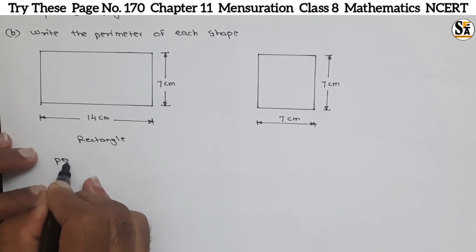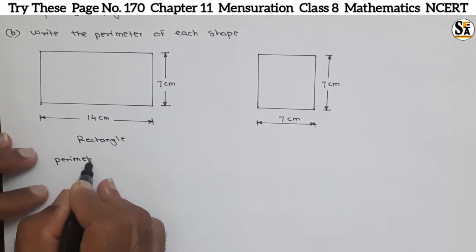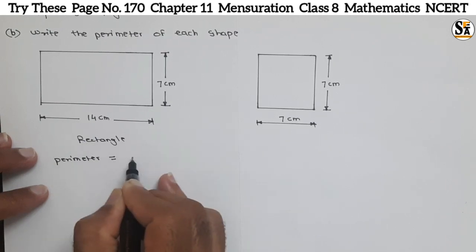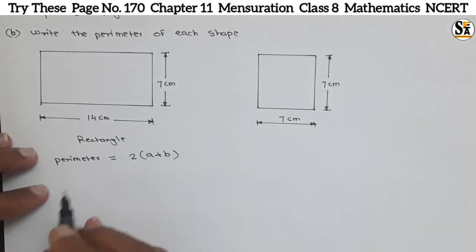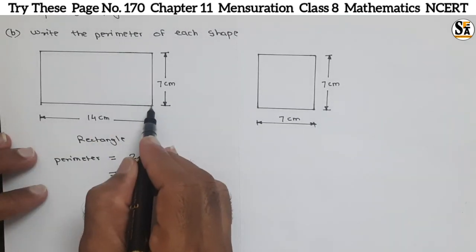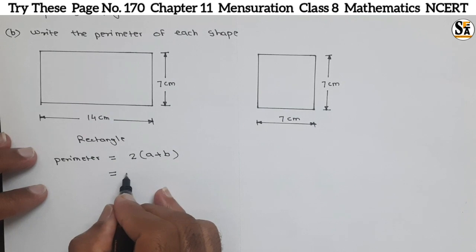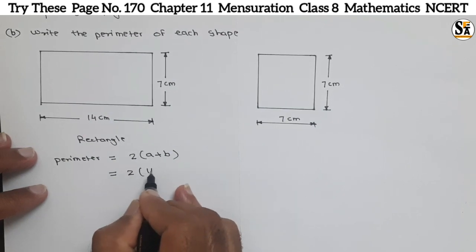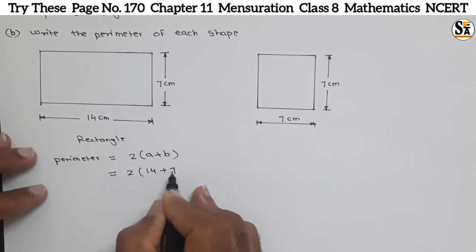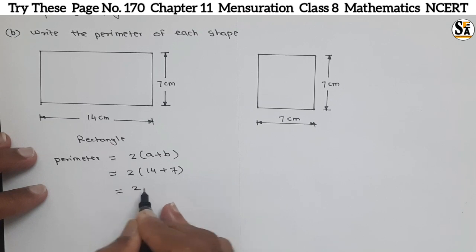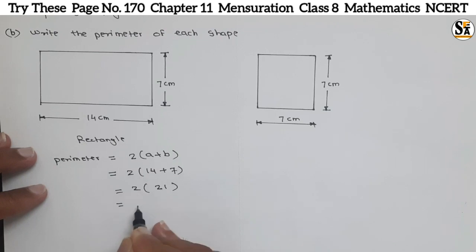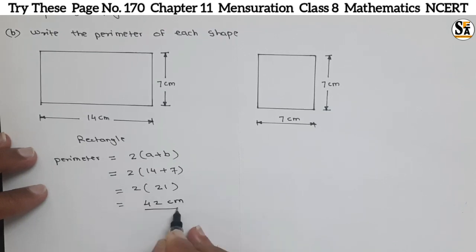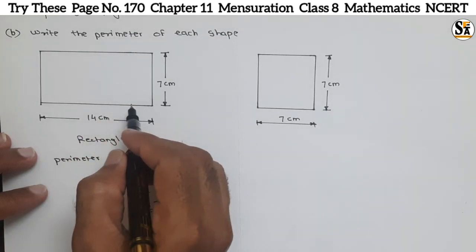The perimeter of a rectangle equals 2 × (A + B), where A is the length and B is the width. Putting in the values: A = 14 centimeters and B = 7 centimeters. The addition of 14 + 7 = 21, and 21 × 2 = 42. So 42 centimeters is the perimeter of this rectangle.